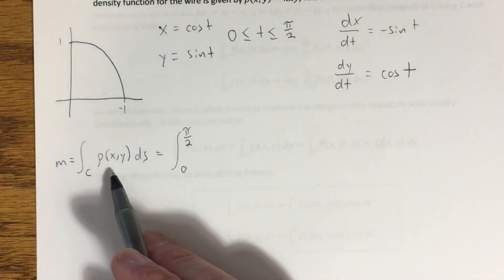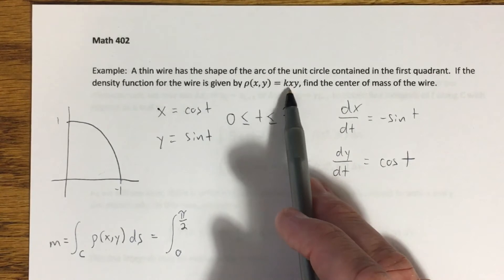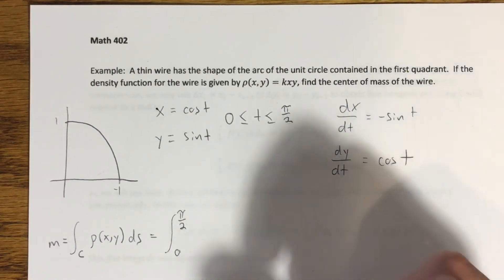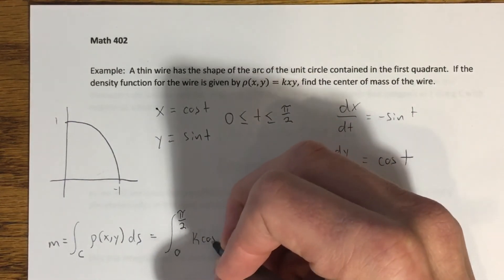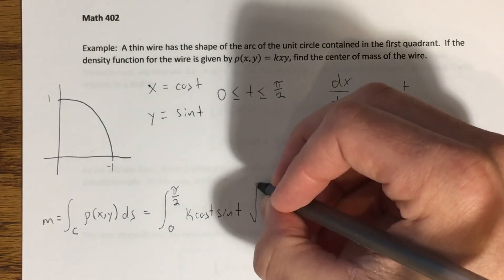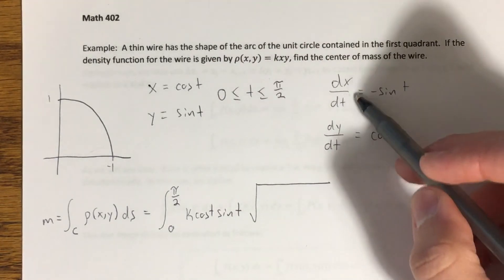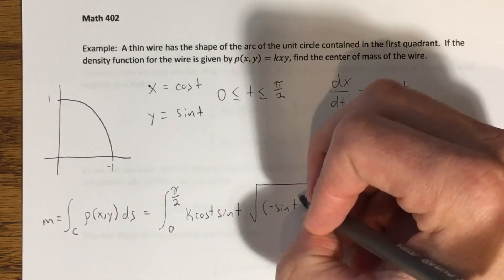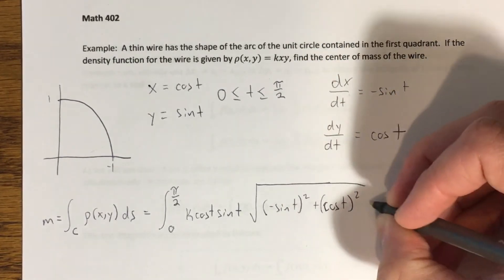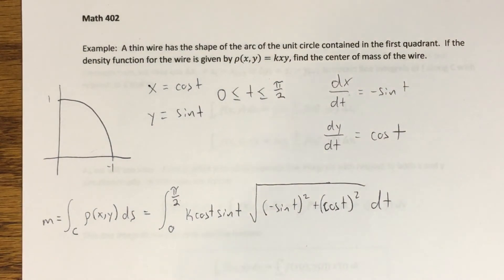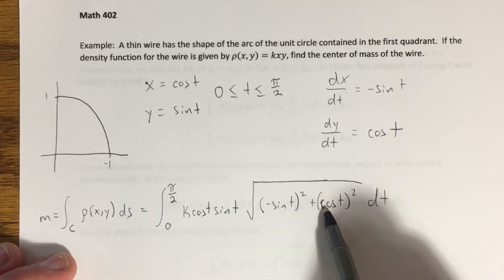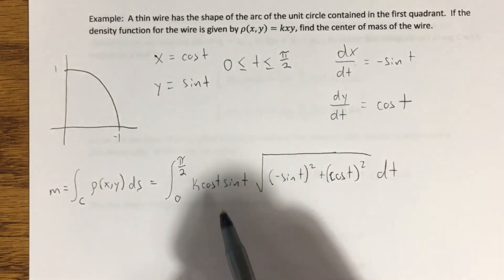Okay. The function that we're integrating, rho of x, y, is given here, k x y. However, we need to make substitutions for x and y so that everything is in terms of t. That means I'm going to change this into k cosine of t sine of t. Okay. And then we need to multiply by the square root of the sum of the squares of dx dt and dy dt. That's going to give me negative sine of t squared plus cosine of t squared dt. Now, it looks much worse than what we started with. However, if you notice, this in here is going to become sine squared plus cosine squared. That's, this whole thing is just going to end up equaling 1. So that makes that a lot easier.